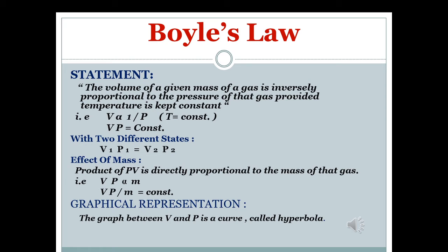The equation will be PV equal to mass times constant. For the graphical representation or PV diagram, pressure is on the y-axis and volume is on the x-axis. When you plot these two different states you will get a hyperbolic curve.